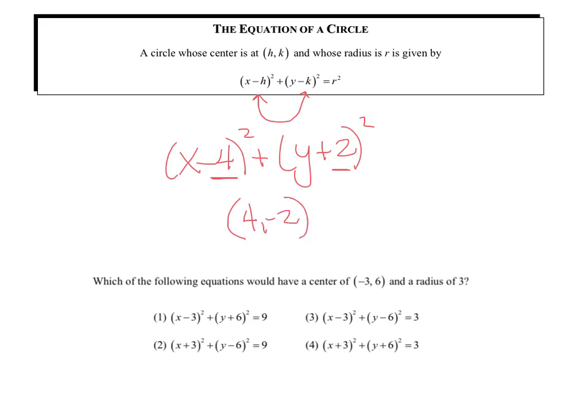Every term is squared — that's kind of the easy thing about circles. That number at the end is equal to r squared. So to actually get your radius, you would have to take its square root.